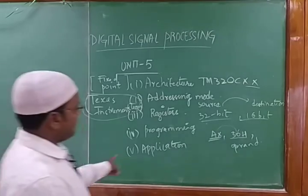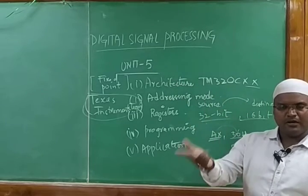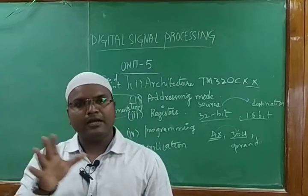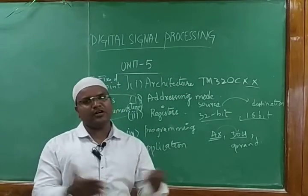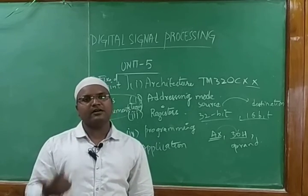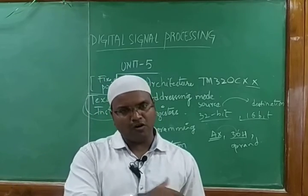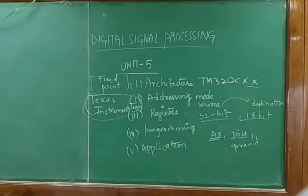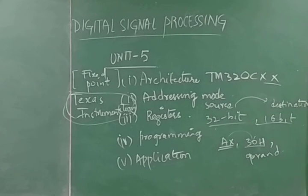The application of DSP processors covers where they are going to be used. These processors are used in every field — in communications, image processing, digital signal processing, antenna and wave propagation. In the communication domain they are especially important, as there are different kinds of communication: wireless, wide-area, Wi-Fi, Bluetooth, Zigbee, and others based on range. Across all these domains this kind of processor is used. This was just an overview of Unit 5 — in the next class we will look at the architecture in detail.